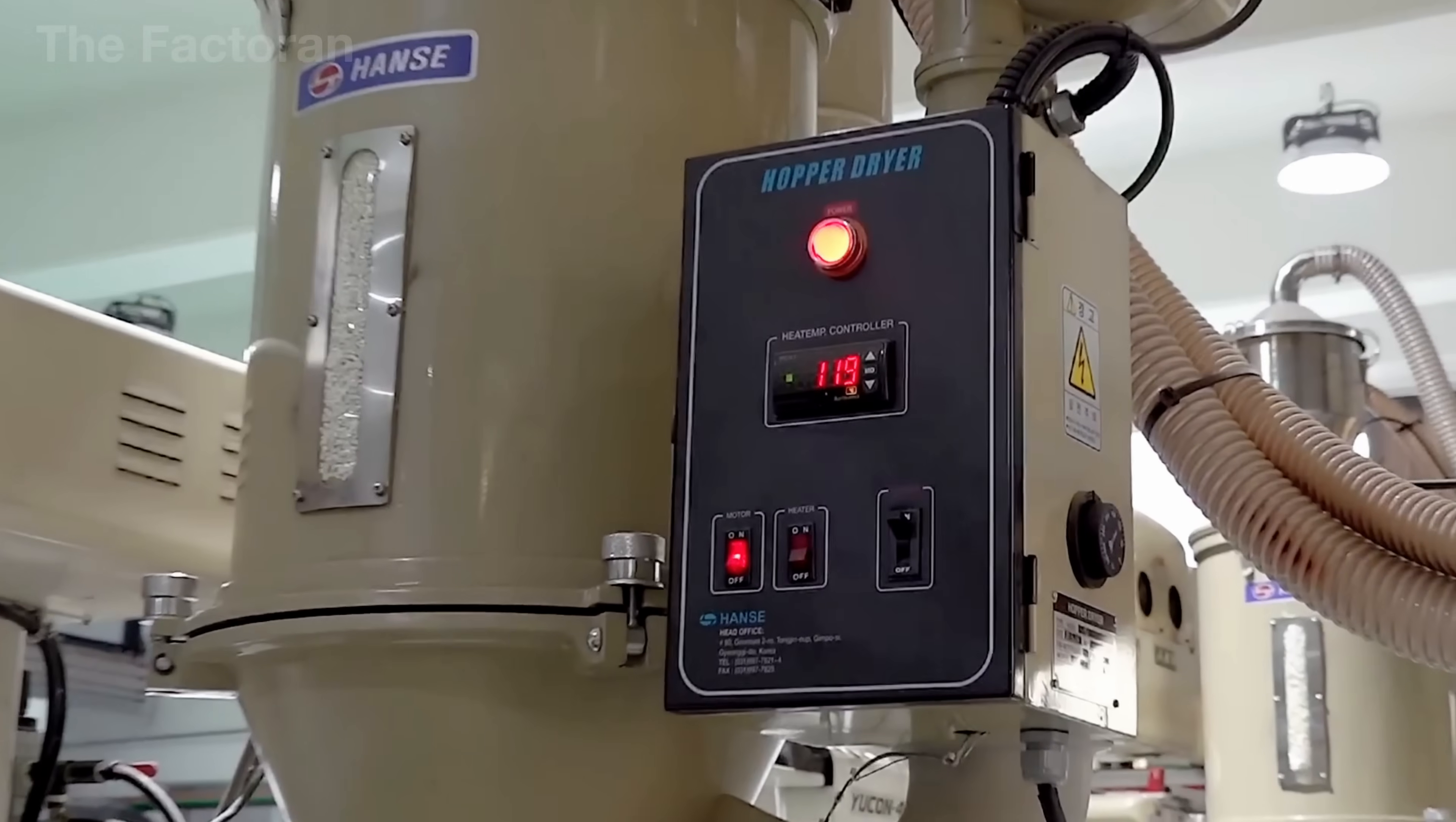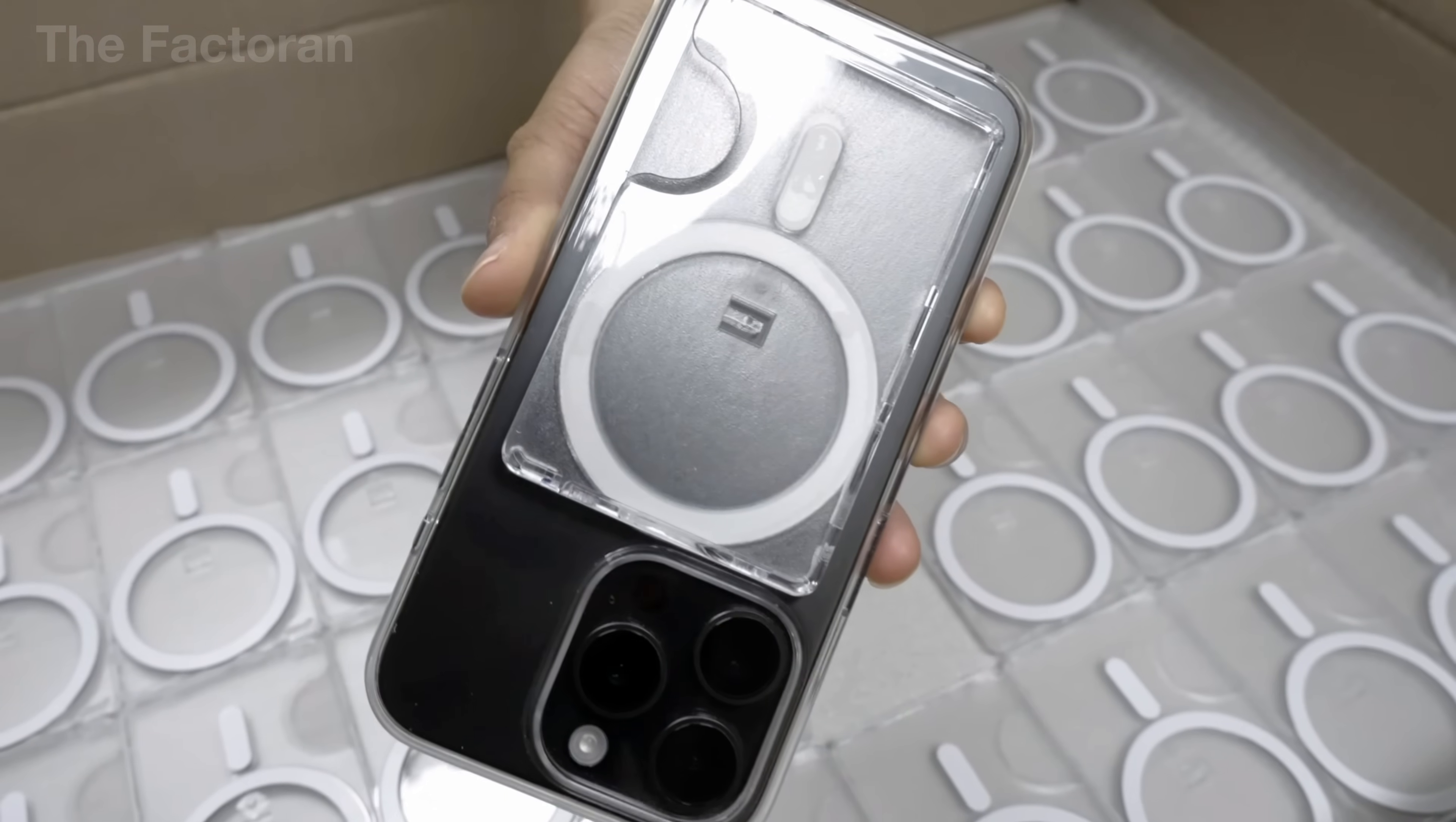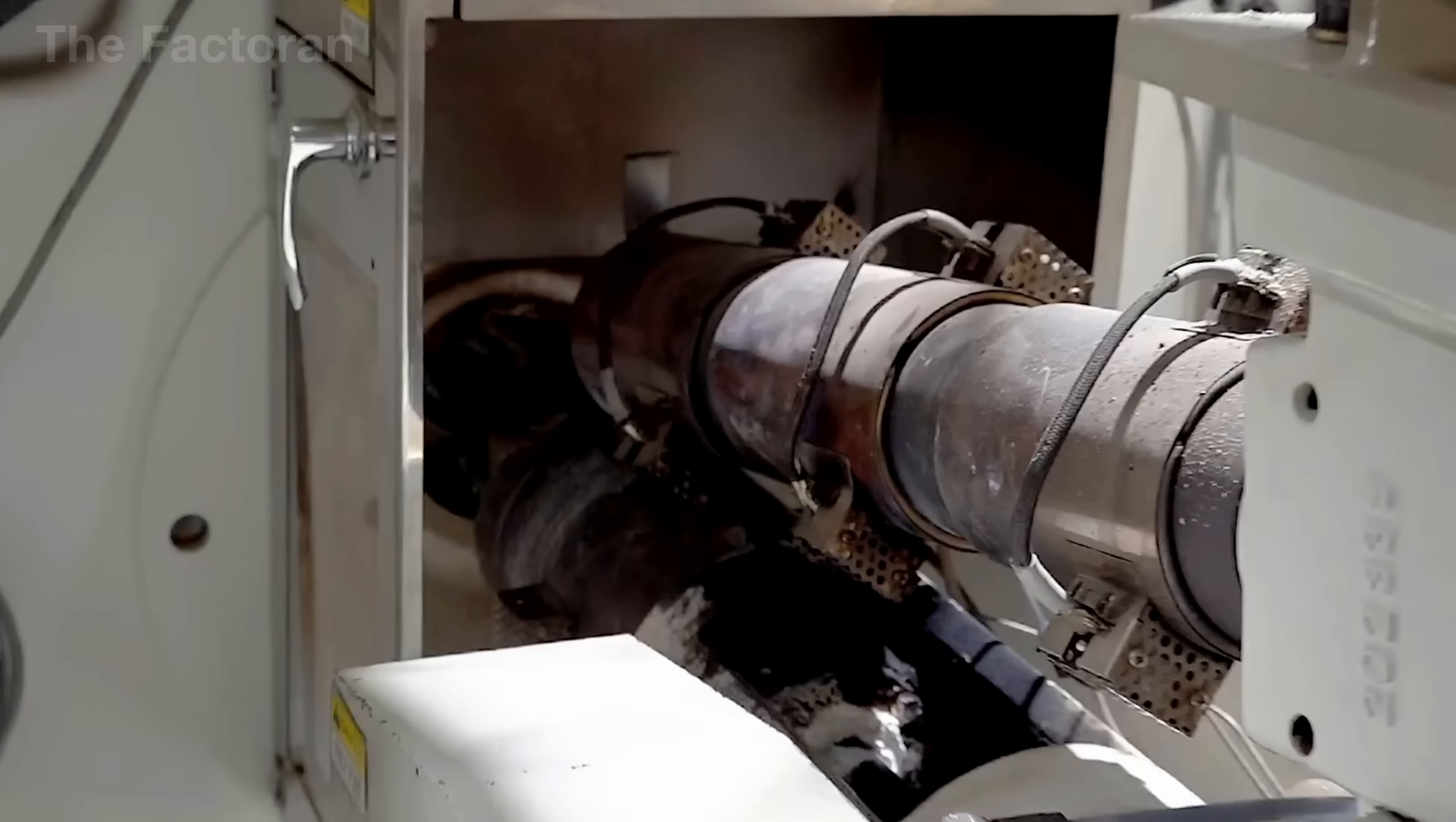And as the iPhone leaves the factory, the journey of another essential accessory begins: the phone case. If the iPhone represents cutting-edge technology, the case serves as its silent armor, providing protection against scratches, drops, and the wear of daily life. The process begins with raw polymer pellets, TPU, PC, or silicone, which are carefully measured and fed into high-precision injection molding machines. These machines heat the material to the exact temperature needed for perfect flow, then inject it into metal molds that define the case's exact shape.